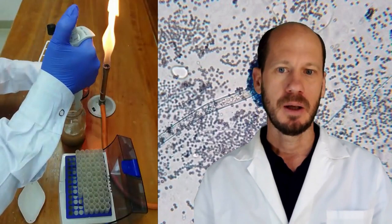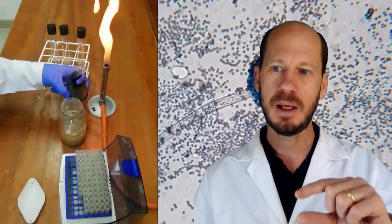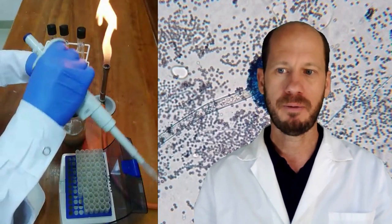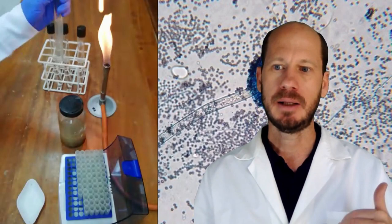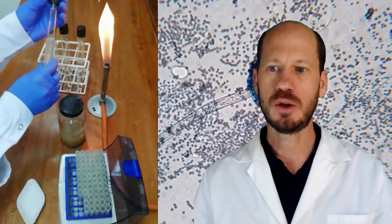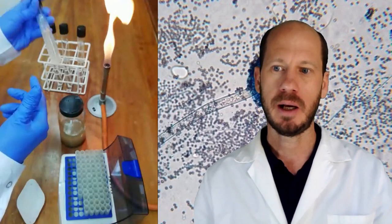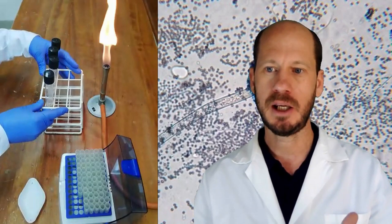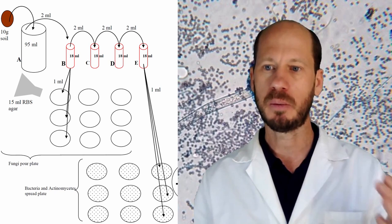From bottle B we will shake and take another 2 mL and transfer to bottle C, which will contain 18 mL of the saline solution, and so on and so forth. The first bottle will be approximately 1 to 10, meaning approximately 1 gram of soil per 10 mL of water. The second bottle will be equivalent to 1 to 100, and the third bottle equivalent to 1 to 1000. The exact proportion we will calculate based on the soil moisture. Each successive bottle will have 10 times lower concentration of microbes than the previous one.